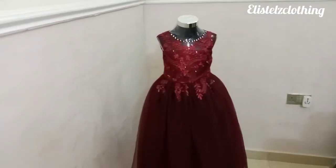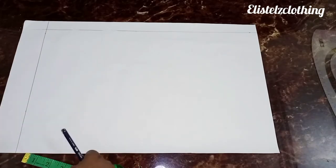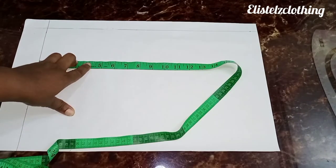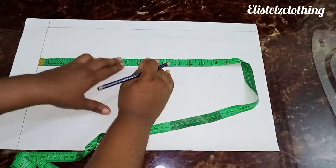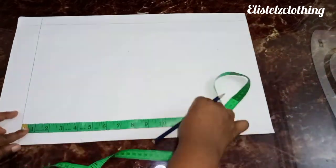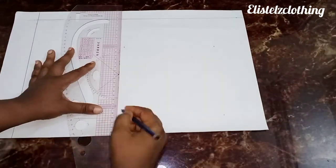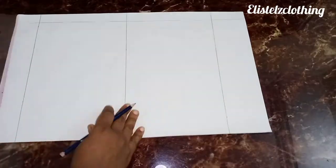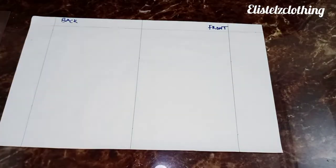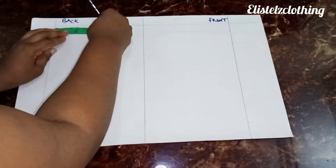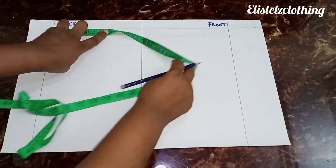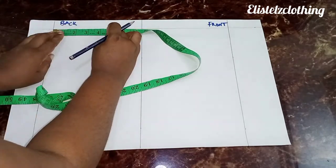So we'll start by getting the space we'll work with. The widest part of her body is her chest, and that's 24. So we'll do 24 over 2, that's 12, then add 3 inches to get 15. We divide that by 2 to get 7.5, because we're going to be drafting the front and the back. Her shoulder is 10, and 10 over 2 is 5.